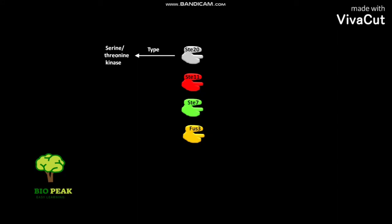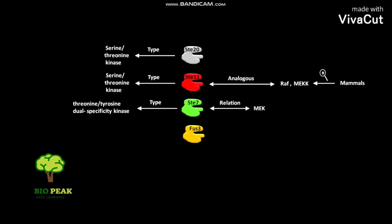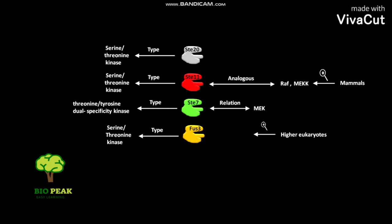ST12 is a type of serine-threonine kinase, as is ST11. Mammals contain RAF and MEKK, which are analogous to ST11. ST7 is a type of threonine-tyrosine dual specificity kinase, related to MEK in other eukaryotes. Phos3 is a type of serine-threonine kinase, and higher eukaryotes contain MAPK, which is functionally equivalent to Phos3.